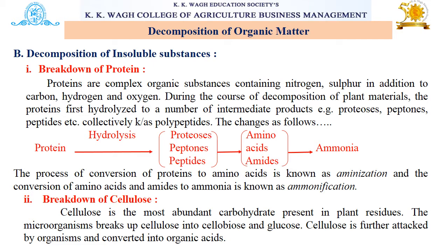The second step under decomposition of organic matter is decomposition of insoluble substances. The first is breakdown of protein. Proteins are complex organic substances containing nitrogen and sulfur in addition to carbon, hydrogen, and oxygen. When these proteins undergo hydrolysis, intermediate products like proteases and peptides are formed, which are further converted into amino acids or amides, and finally these amino acids and amides are converted into ammonia.